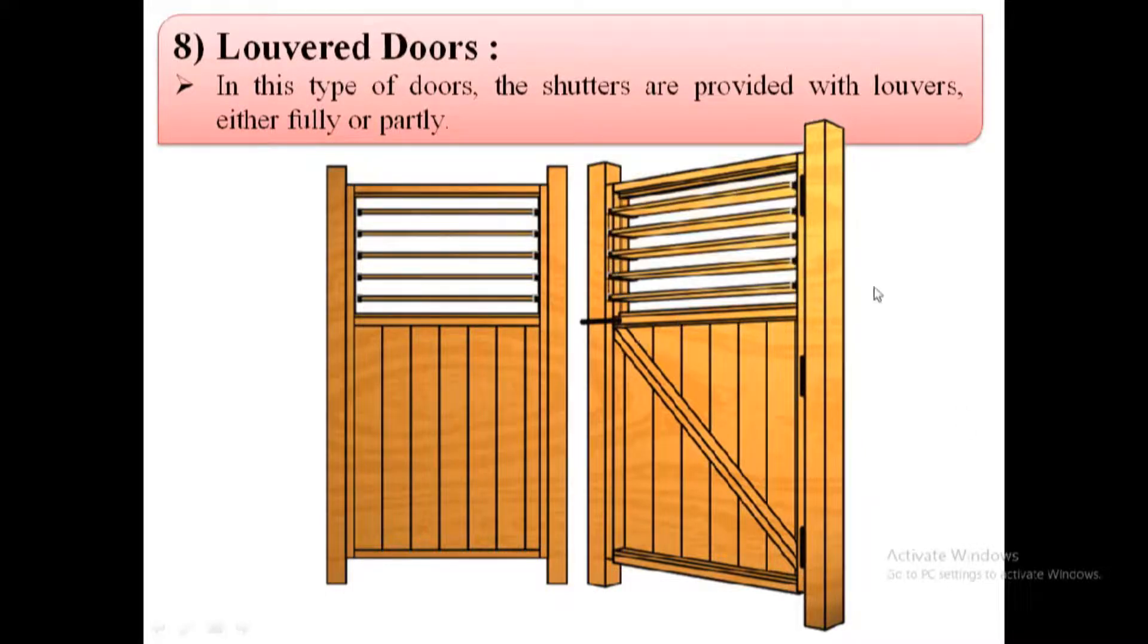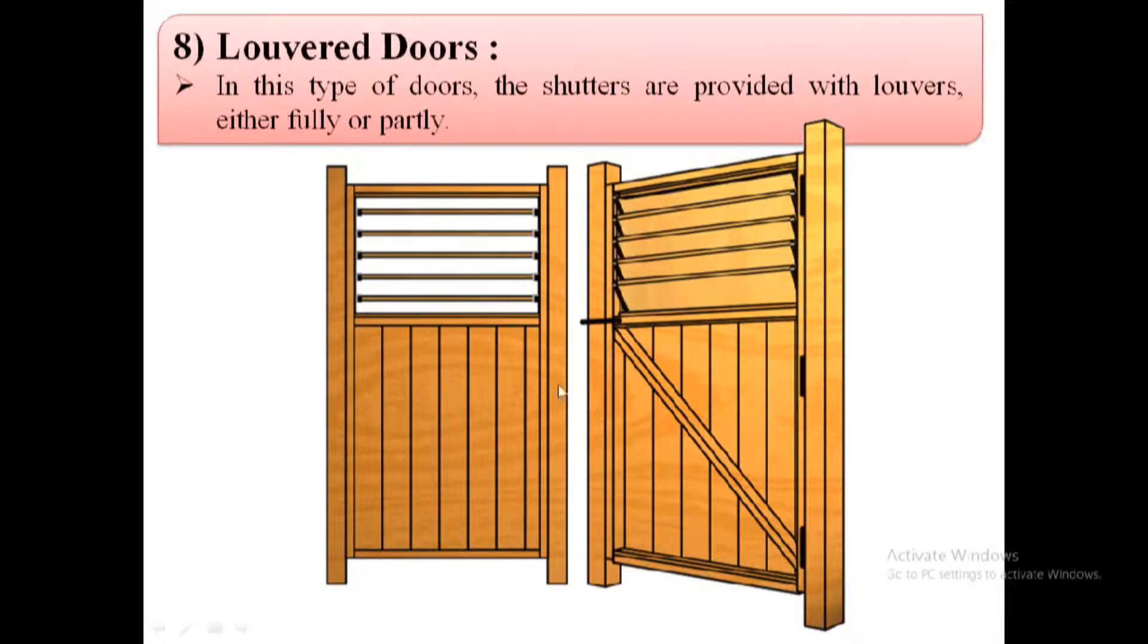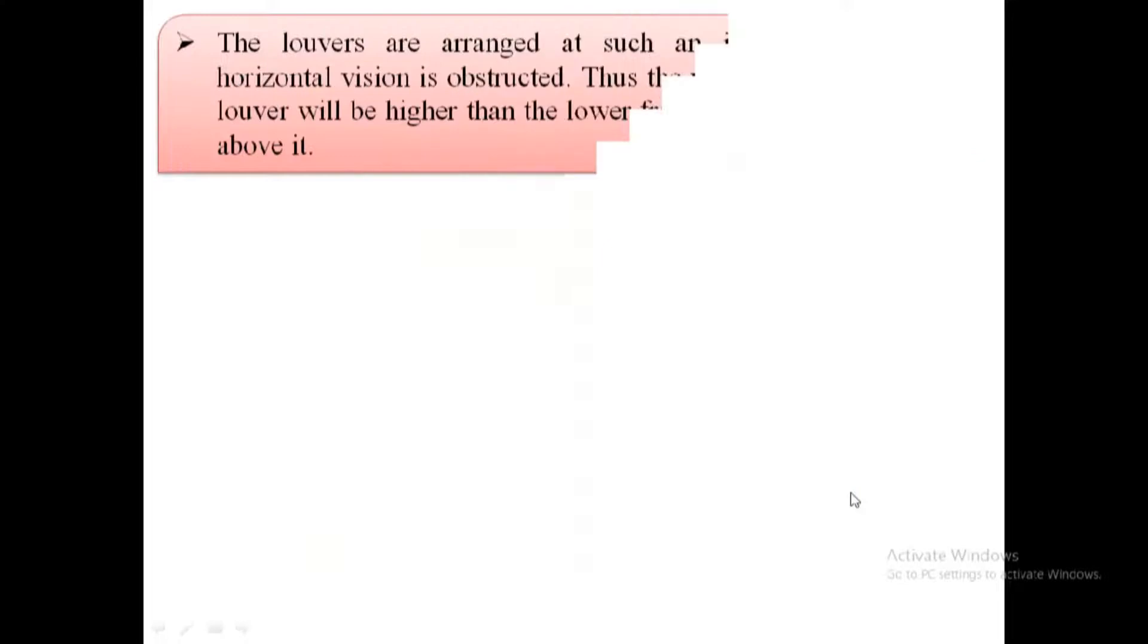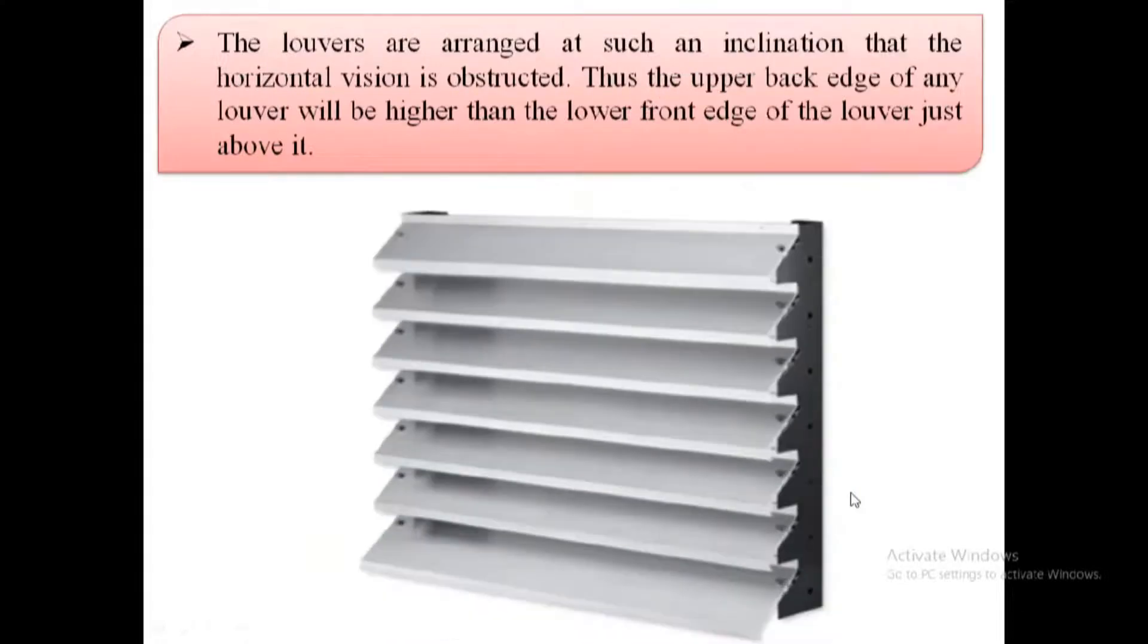These doors are used for latrines and bathrooms of residential and public buildings. These doors may either be louvered to the full height, or they may be partly louvered and partly paneled. Louvers are arranged at such an inclination that they permit the passage of air through them. Louvers may be fixed or movable.